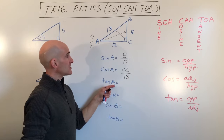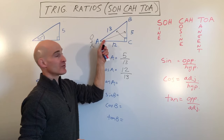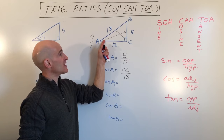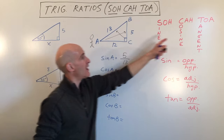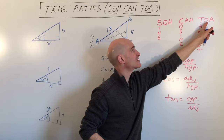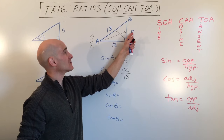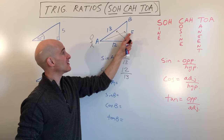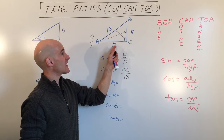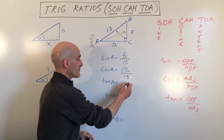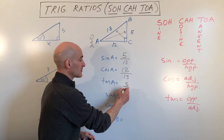The tangent of angle A is opposite over adjacent. Opposite is across — that's 5 — and adjacent is next to — that's 12. So the tangent of angle A is 5 twelfths.